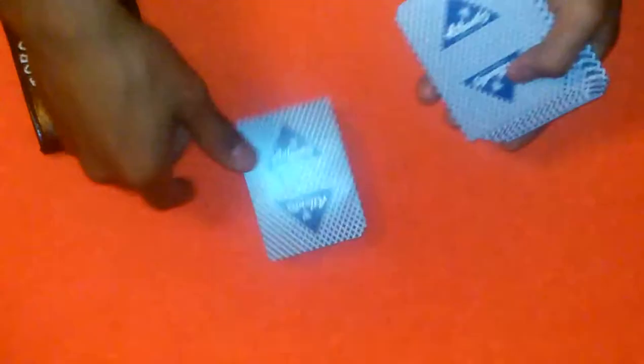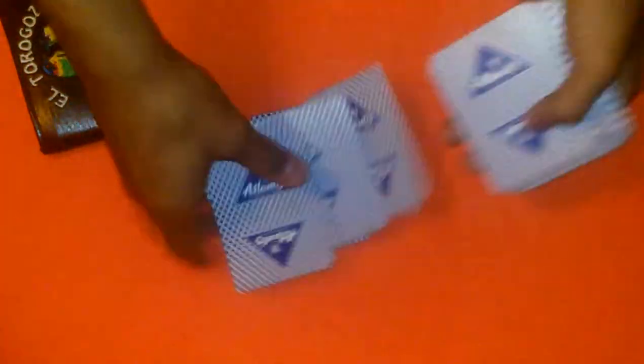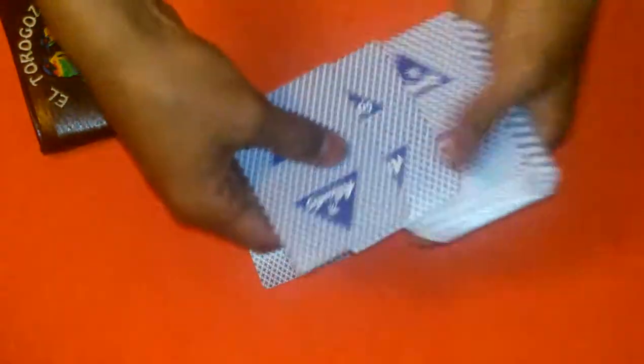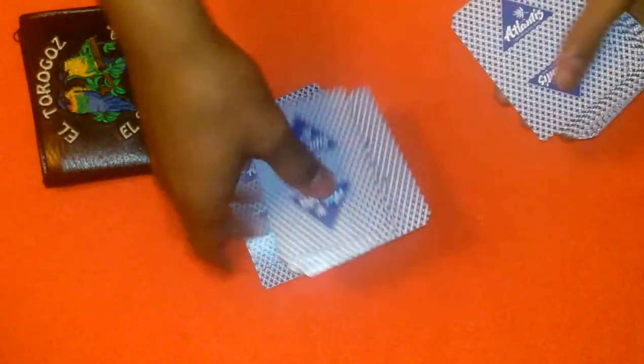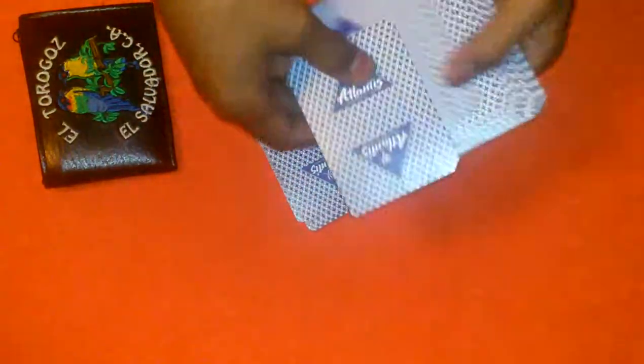Then tell them to start dealing the cards down as much as they like. Now what's happening is no matter how many cards they deal down, when you drop this on top of that deck, that card is going to end up being at the top. They say okay, this is enough, I want to stop right here.